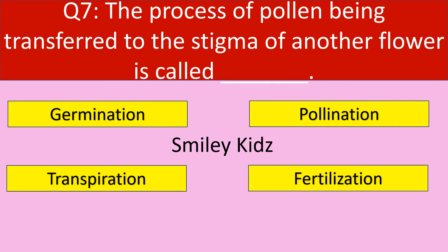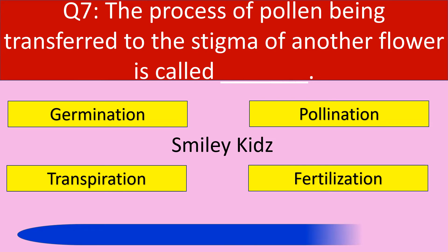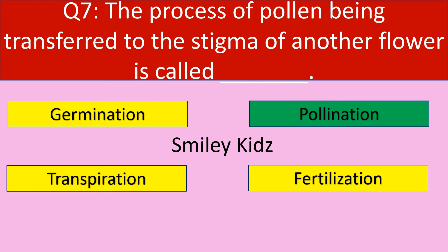Question number 7. The process of pollen being transferred to the stigma of another flower is called — germination, pollination, transpiration, or fertilization. The correct answer is pollination. The process of pollen being transferred to the stigma of another flower is called pollination.